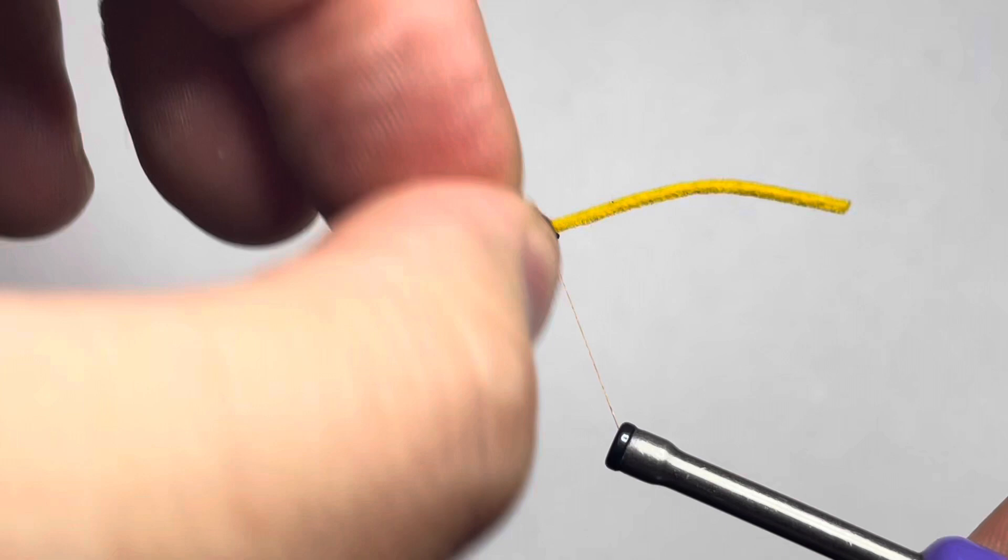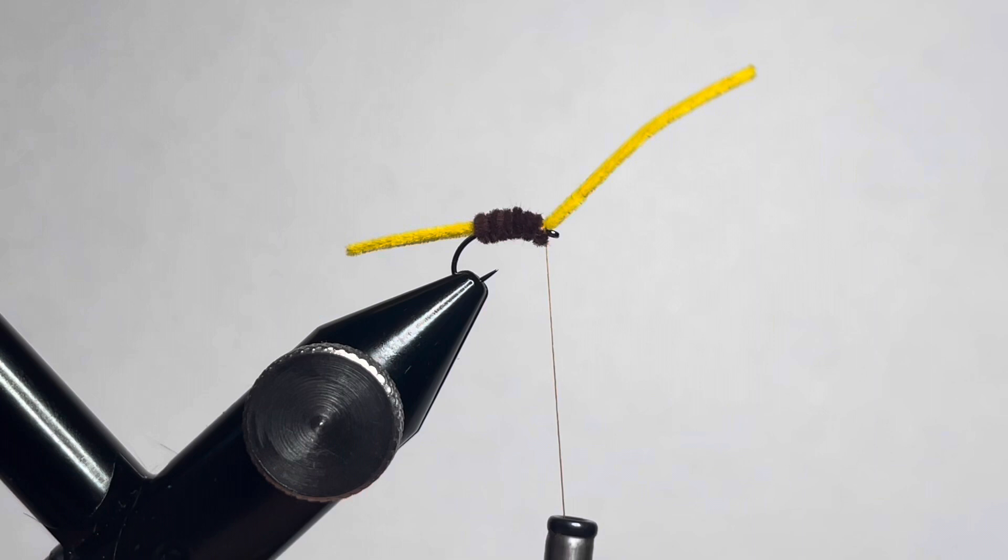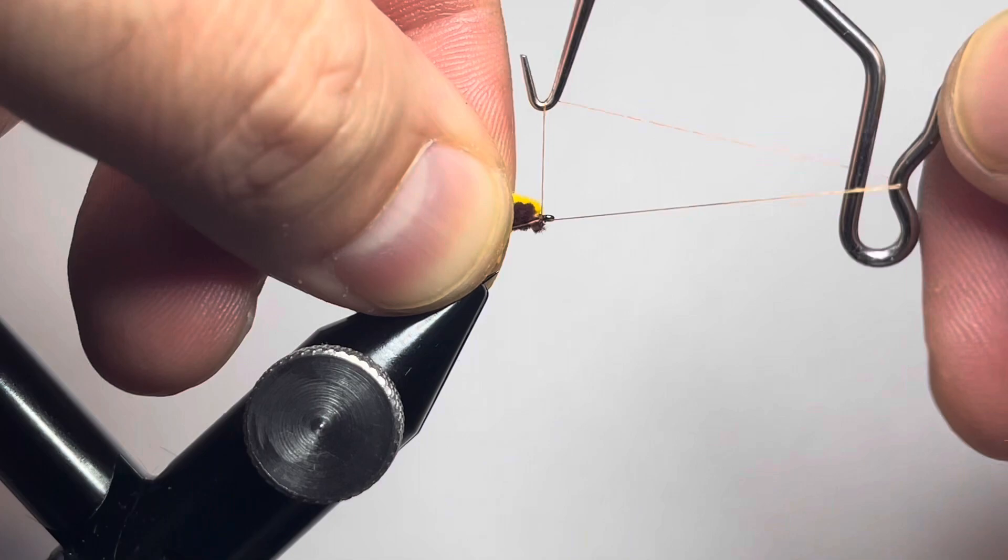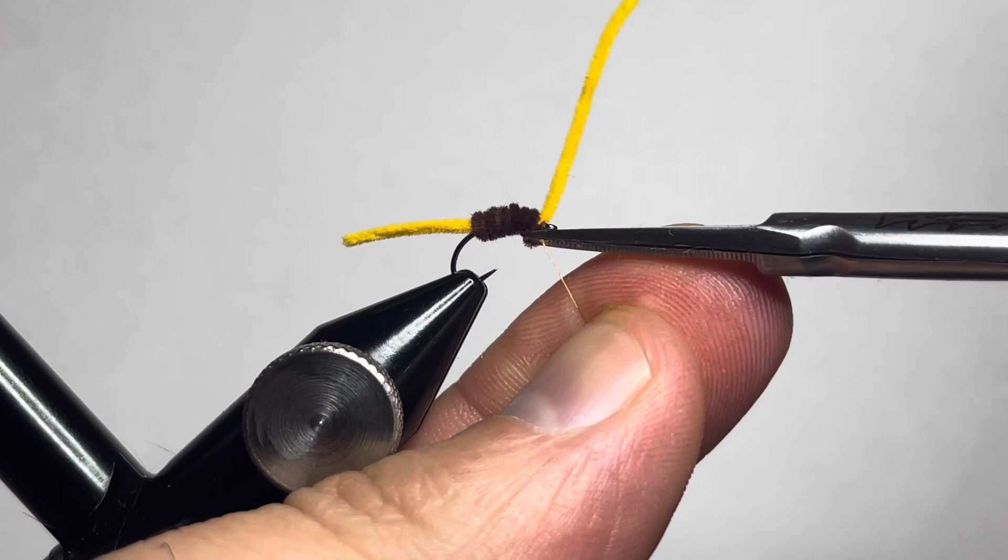We'll go ahead and grab our whip finisher and do a four-turn whip finish to secure our thread, and then trim off our thread.